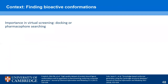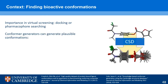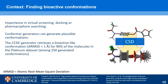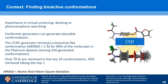The context here is to find bioactive conformations, which is important in virtual screening — you want to find actives among many decoys in huge libraries. For this you need to take into account the 3D structure of the molecule. You can use docking or pharmacophore searching, which always require a 3D structure. Traditional conformer generators can find plausible 3D conformations, but only 70% of bioactive-like conformations are retrieved in the top 10, and only 40% taking just the top one.